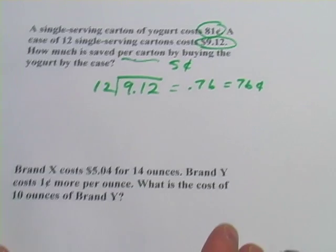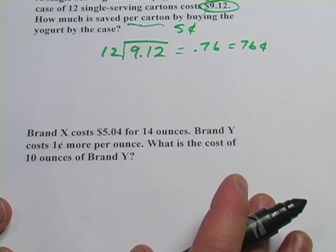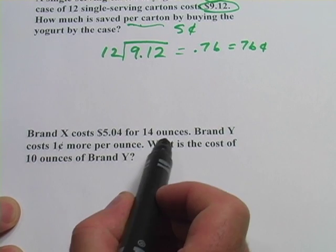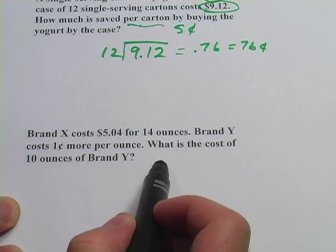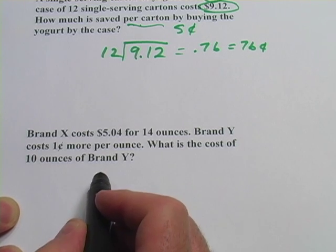All right, one more. This one says brand X costs $5.04 for 14 ounces. Brand Y costs 1 cent more per ounce. What is the cost of 10 ounces of brand Y?